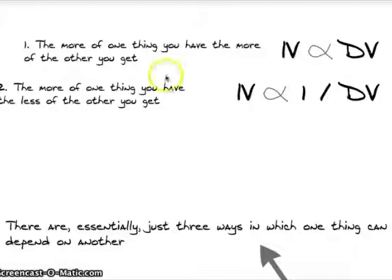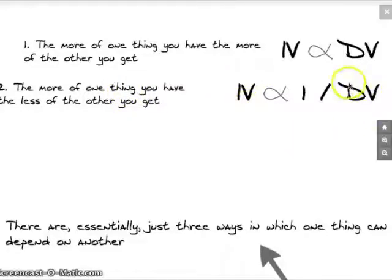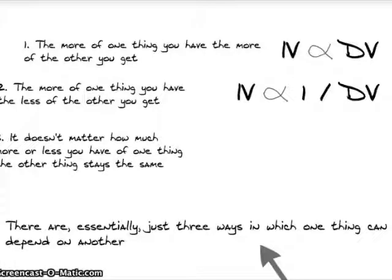For example, the first relationship could be like height and shoe size — generally speaking, the taller you are, the bigger your feet. The second could be ambient temperature and amount of clothes worn: the warmer it is, the less clothing you tend to wear. Finally, we could also have a relationship of no relationship — it doesn't matter what you do to the independent variable, the dependent variable doesn't seem to be affected by it at all.